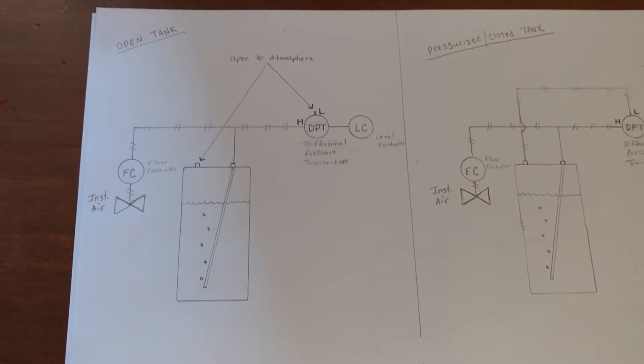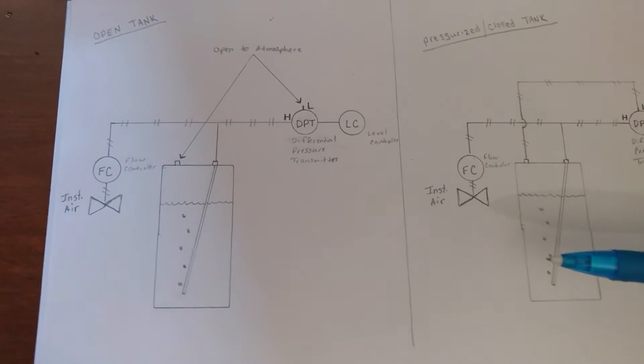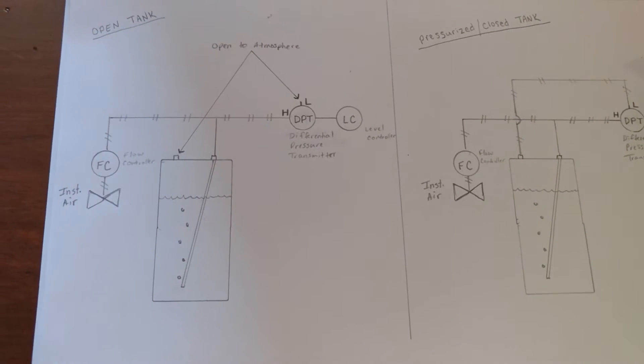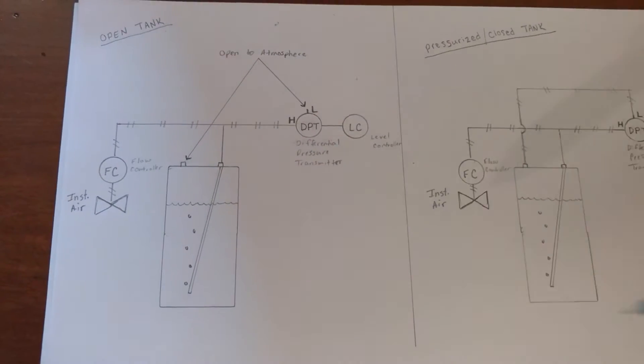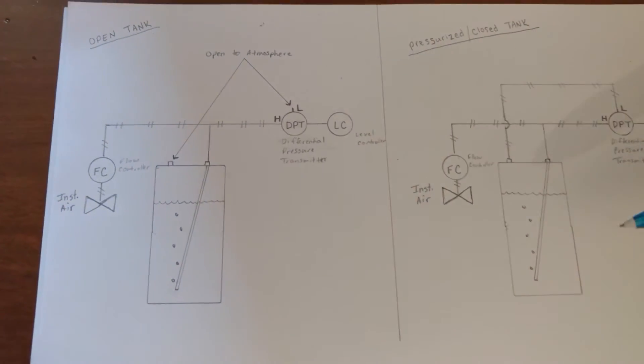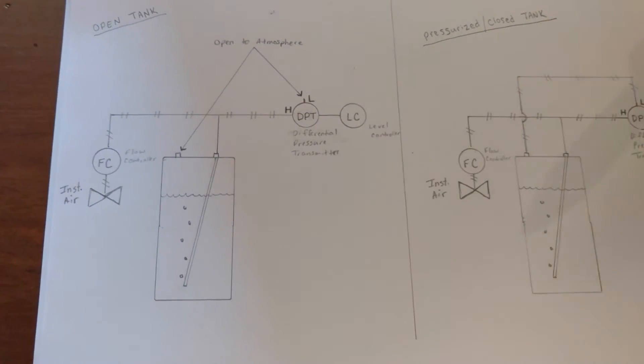So a bubbler system is a system that you're going to use to find the level of a tank, a pressurized tank, a vessel with liquid in it, or a pond, where you don't have access to the bottom of the container and you can't use a hydrostatic pressure transmitter.